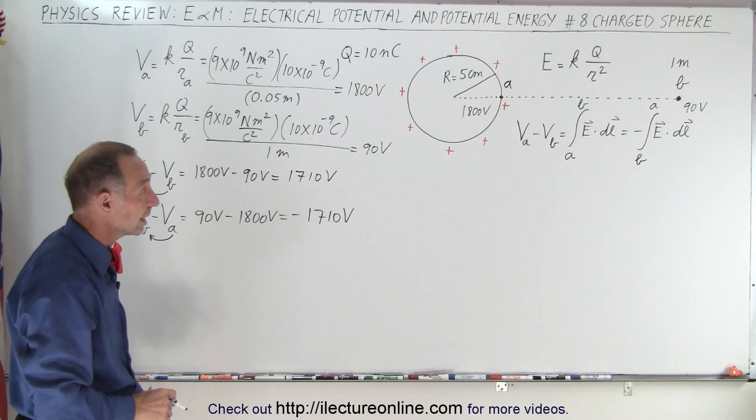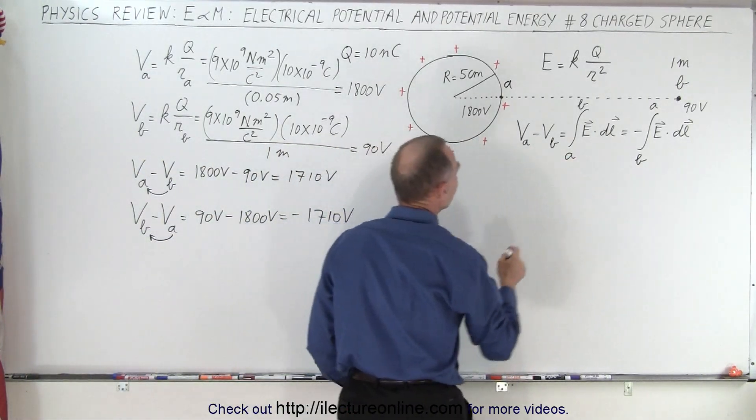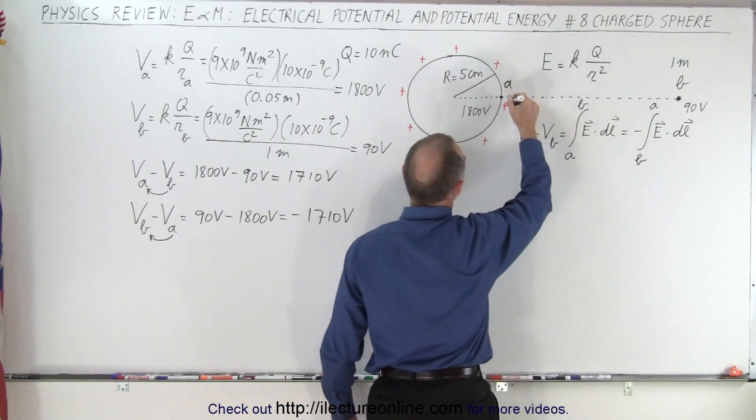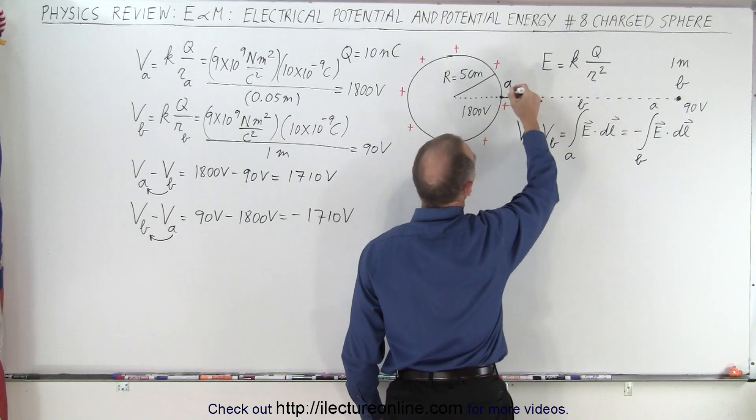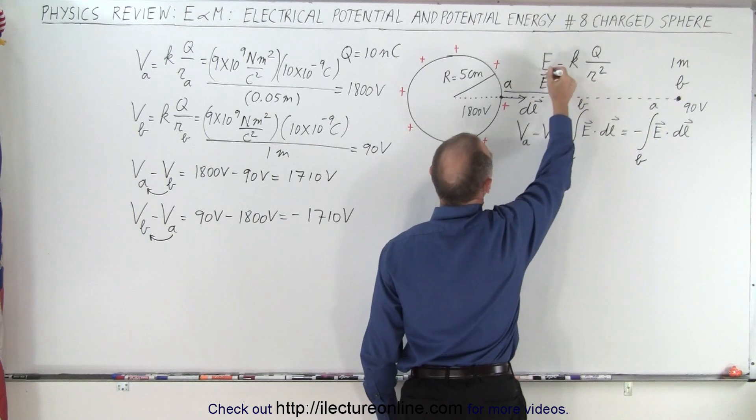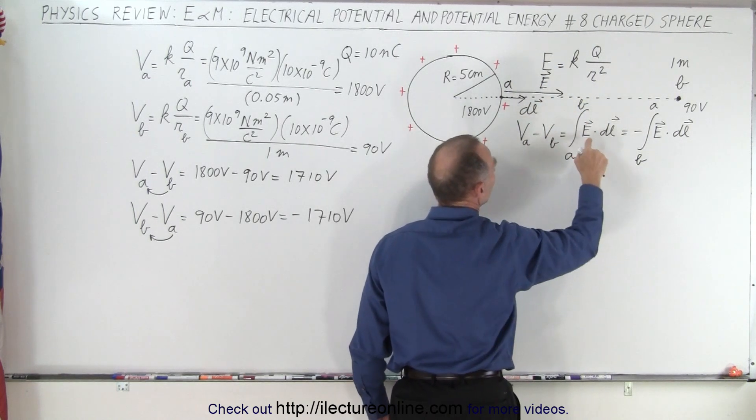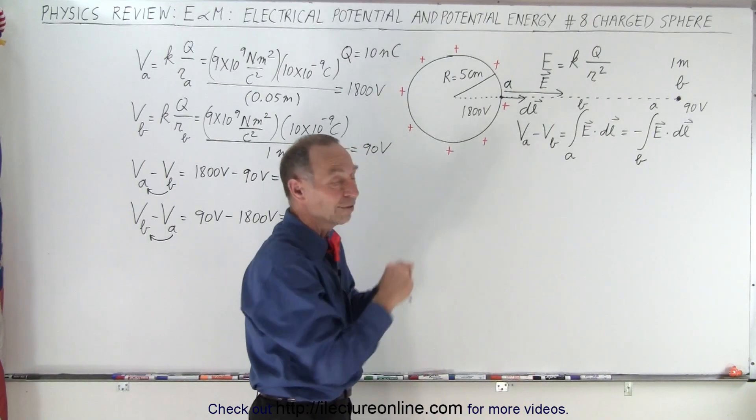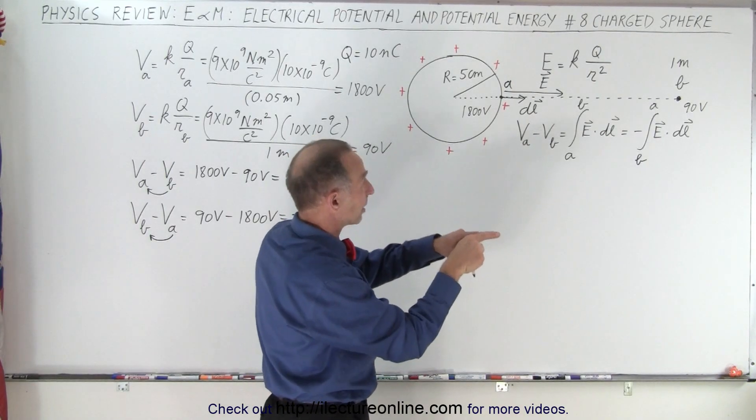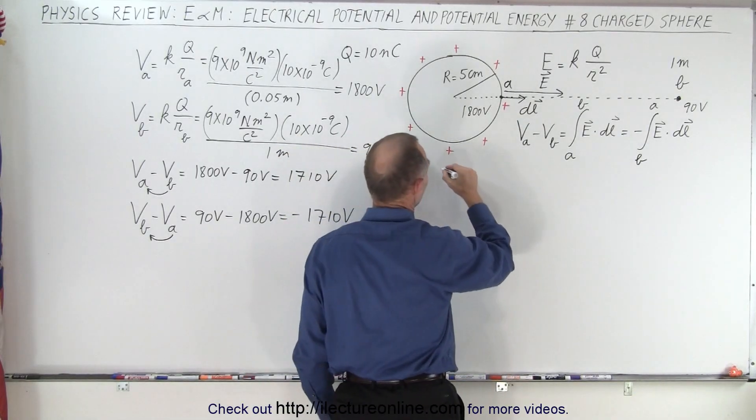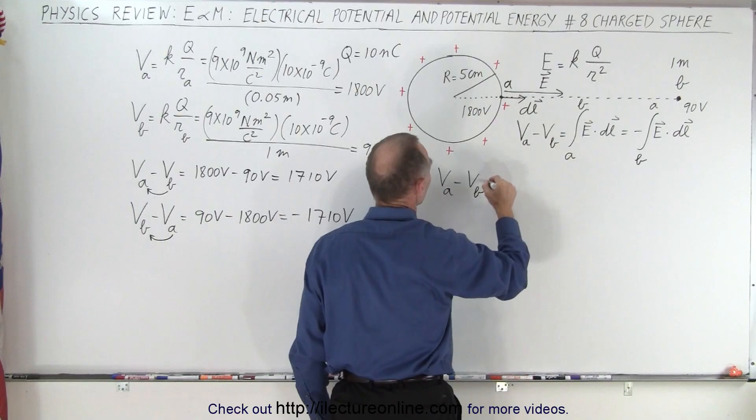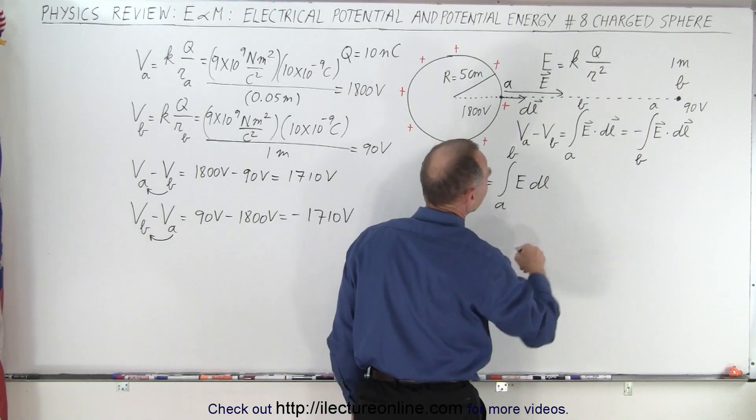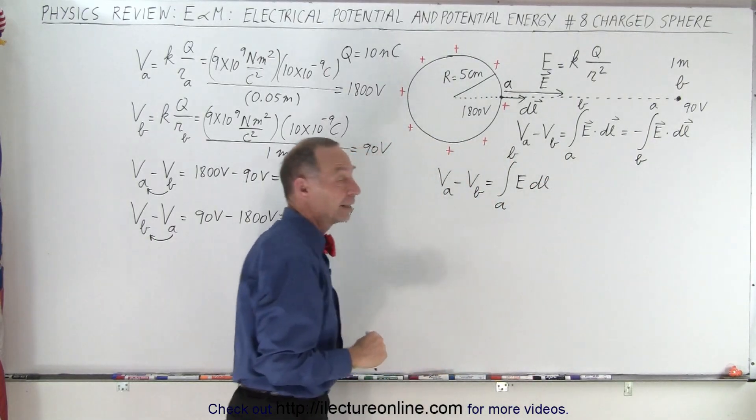Now we should be able to get the same result using the integral equation. Notice that the integral goes from A to B, that means our DL goes from A to B, that means we have a small DL in this direction, and we have the electric field in this direction. So notice that in this case if we integrate from A to B, both E and DL are pointed in the same direction. Since it's a dot product we multiply E times DL times the cosine of the angle between them, but since they're pointing the same direction, the angle is 0, and the cosine of 0 is 1. So this can be written as VA minus VB is therefore equal to the integral going from A to B of E times DL.